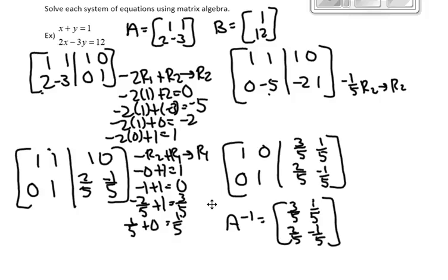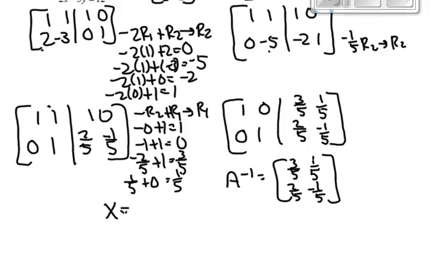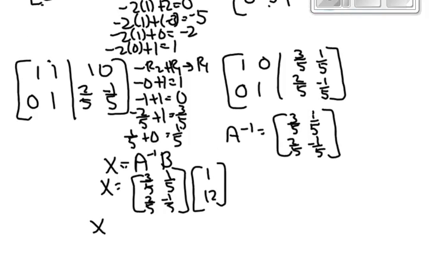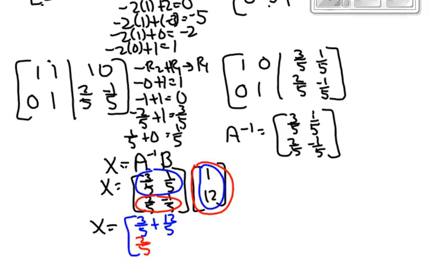Now to get my solution, remember X is equal to A inverse times B. We now know what A inverse is. B originally in this problem is [1, 12]. All I need to do at this stage is do matrix multiplication. I'll take this first row and multiply by that column, then take this row and multiply by this column. Simplifying: 15/5 is 3, and that gives negative 2. So my solution is x = 3 and y = -2.